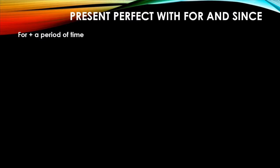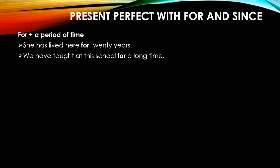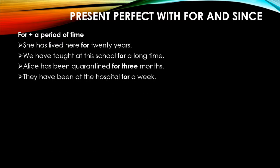Lastly, we'll see present perfect with 'for' and 'since'. 'For' is used for a period of time. Examples: 'She has lived here for 20 years', 'We have taught at this school for a long time', 'Alice has been quarantined for three months', 'They have been at the hospital for a week.' As you can see, a period of time is mentioned, so we use 'for'.